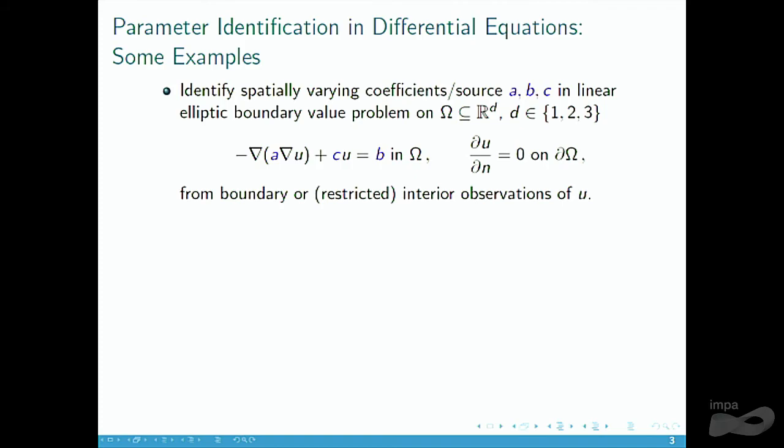Starting with some examples: this is kind of the mother of all parameter identification problems, with different versions. We have an elliptic boundary value problem with some coefficients inside, and we would like to identify these coefficients from observations of the state U, maybe at the boundary — which would be related to electrical impedance tomography. If we assume C and B are zero and want to identify A, this is the problem that Bastian showed us nicely yesterday.